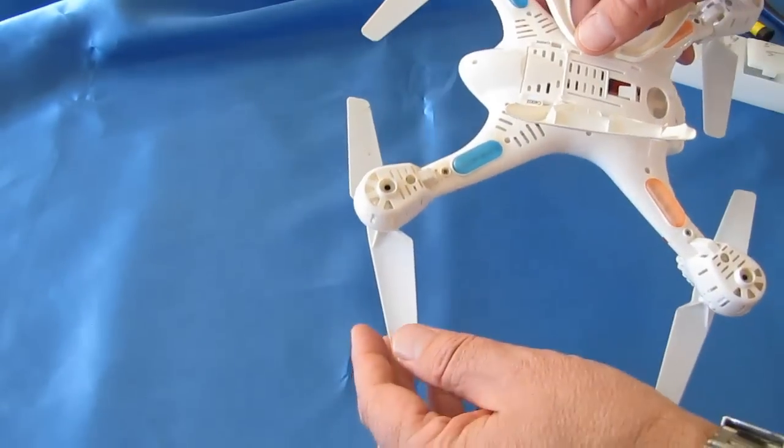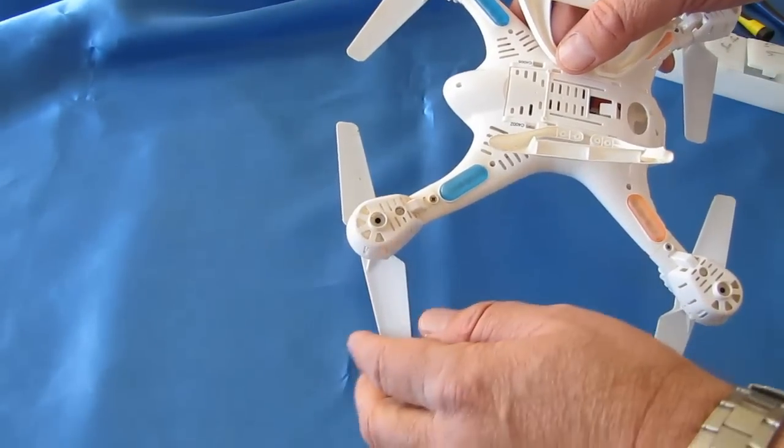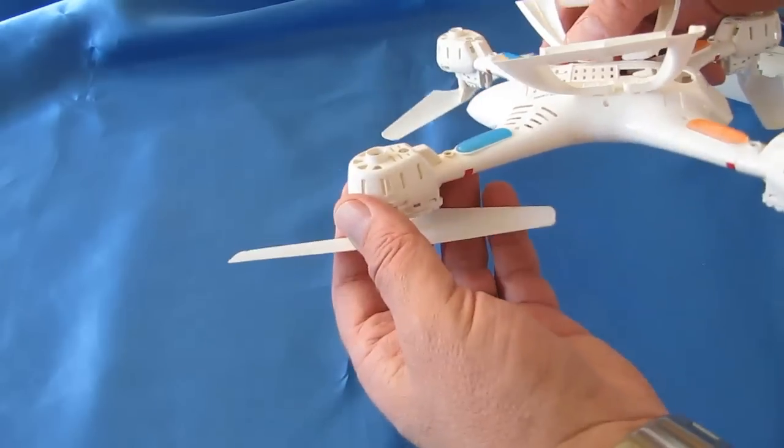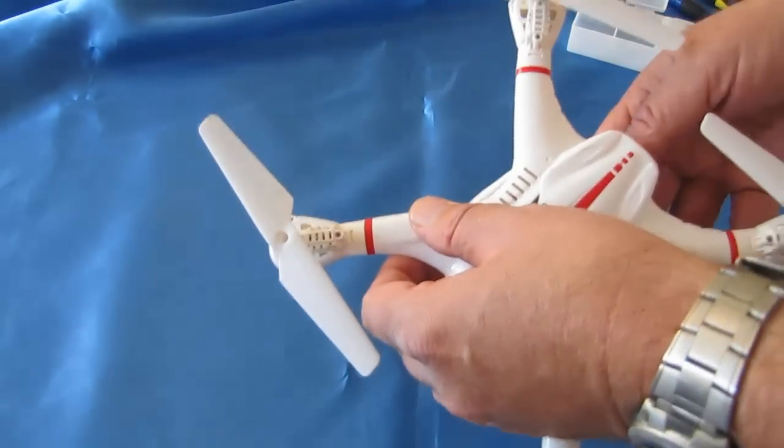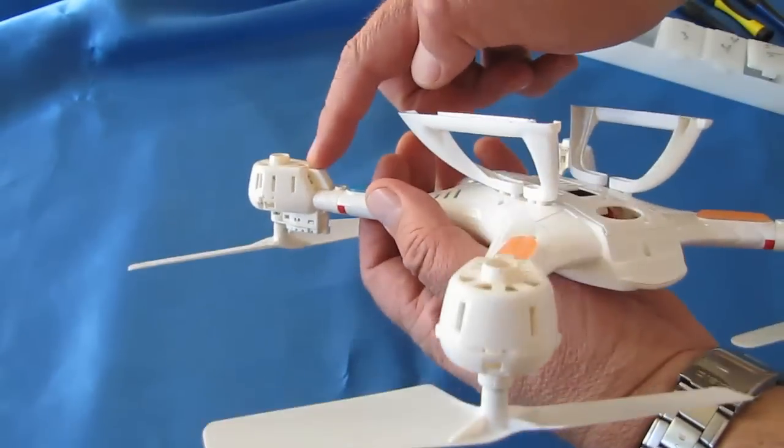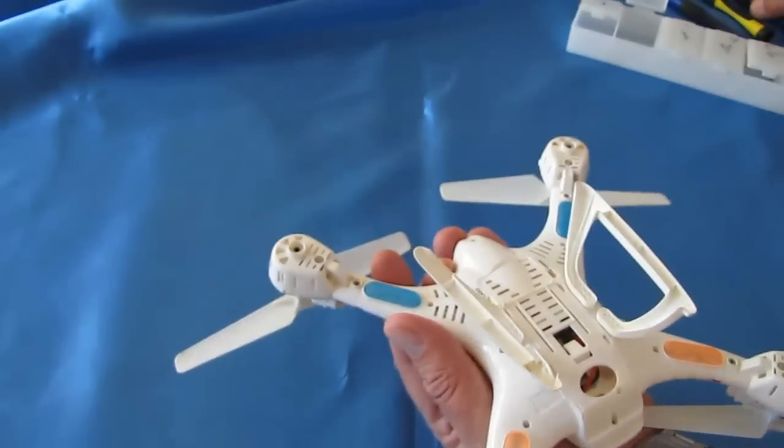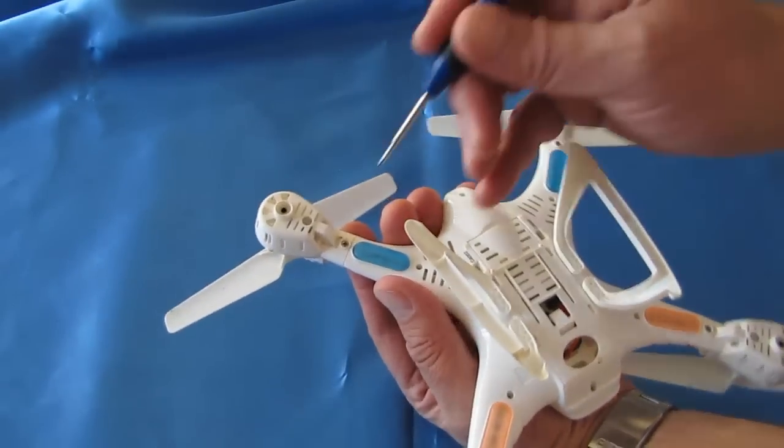As with all geared propeller quadcopters, sometimes you want to get in there and be able to clean those gears. But the X400 has a special way that you're going to need to know how to take it apart so you can get inside there. I'm just going to go over it step by step real quick in front of the camera here.